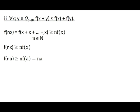From condition 2, for any positive rational X and positive integer N, F of N times X is not less than N times F of X. From this we can conclude that F of N times A is not less than N times A, since F of A equals A.